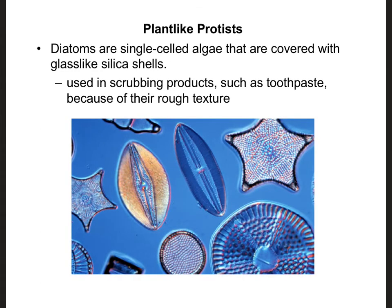Here's another plant-like protist — this is a single-celled protist called a diatom. With plant-like protists, you can actually use the term algae synonymously. A diatom is an example of single-celled algae, or a single-celled plant-like protist. These guys have a shell made of silica, which is basically the same material as glass. Interestingly, they are used commercially as a scrubbing agent and are found in products like toothpaste, where their rough texture serves as an abrasive force to help scrub your teeth.